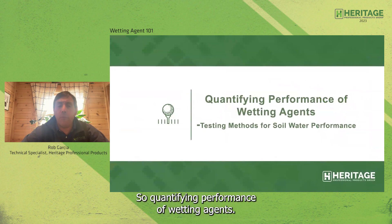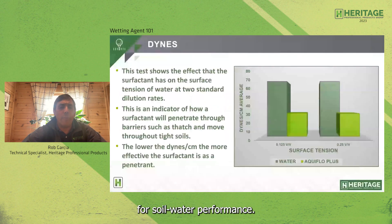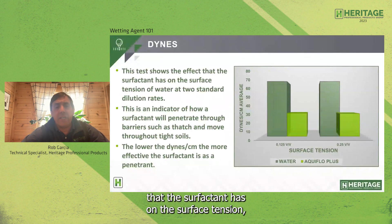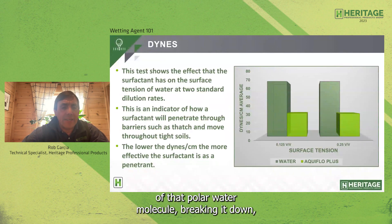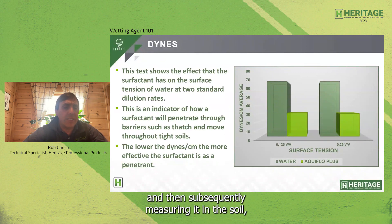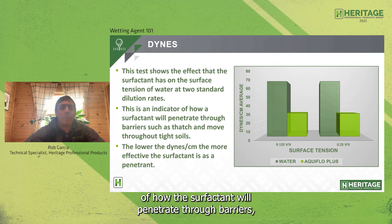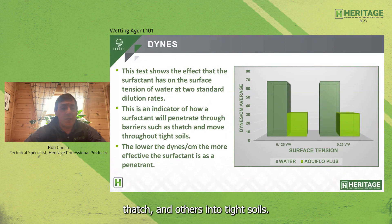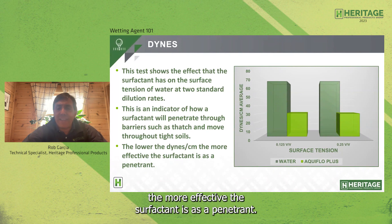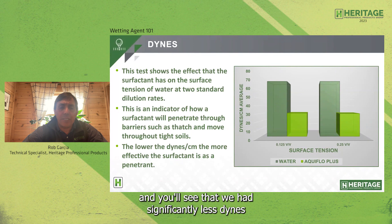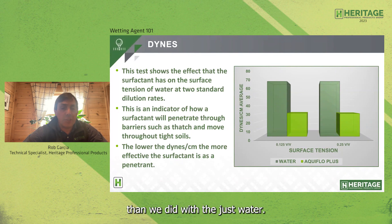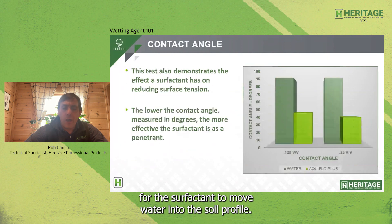Quantifying performance of wetting agents — testing methods for soil water performance. The dynes test shows the effects the surfactant has on surface tension, addressing the polarity of the water molecule. The lower the dynes per centimeter, the more effective the surfactant is as a penetrant. AquaFlow Plus, tested at two rates, showed significantly fewer dynes than just water — a good measurement of the surfactant's ability to move water into the soil profile. The contact angle test demonstrates the effects of a surfactant on reduction of surface tension; the lower the contact angle (measured in degrees), the more effective the surfactant as a penetrant. AquaFlow Plus performed better as a penetrant than just water.